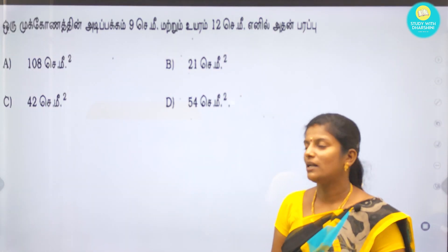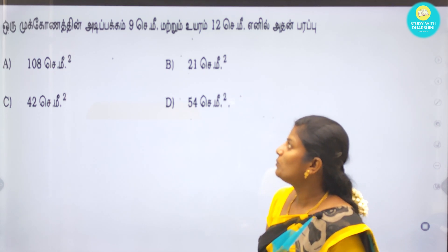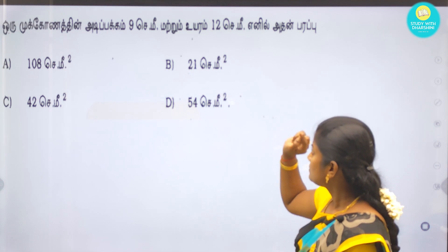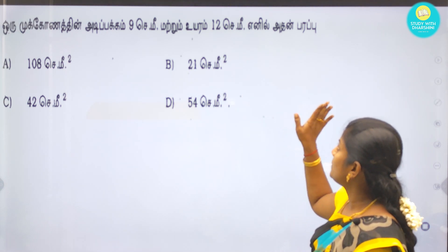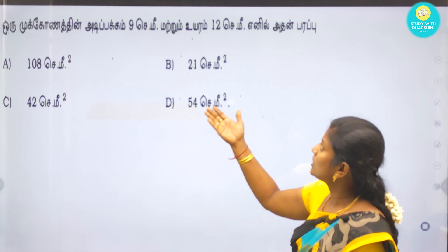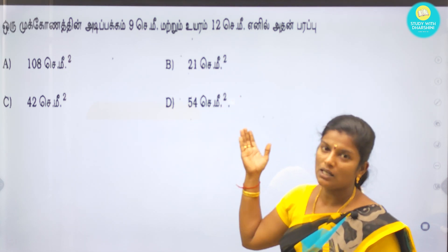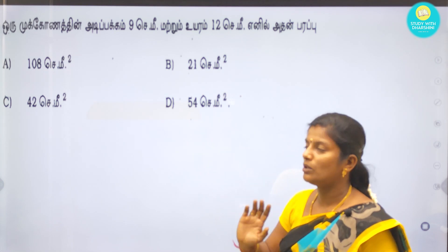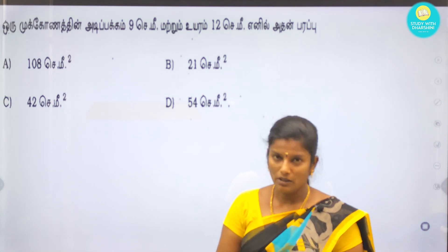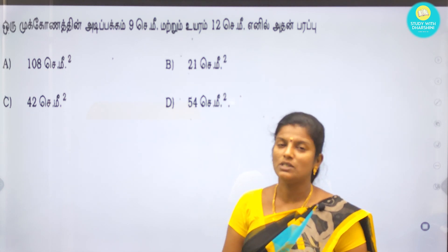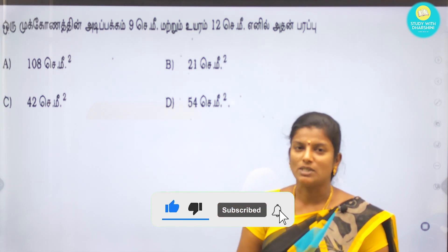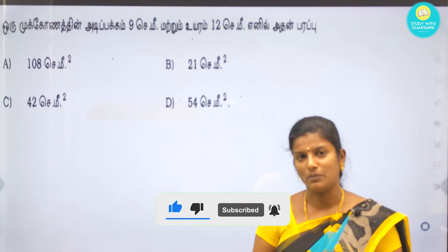For the last practice question: a triangle has one side of 15 cm and another of 22 cm — find whether it is a right-angle triangle. You can answer in the comments. If you enjoyed this video, please like, share, comment, and subscribe to our channel. Thank you.